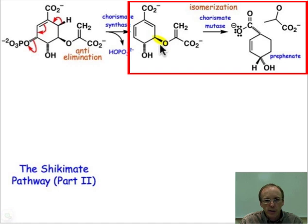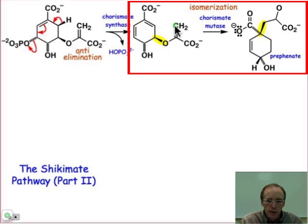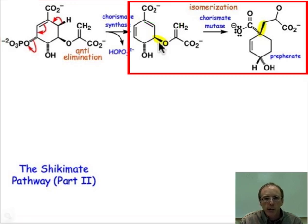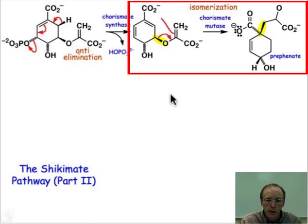The bond that breaks is this carbon-oxygen bond that's highlighted in yellow. The bond that's made is this carbon-carbon bond shown in yellow, and the way that comes about is a connection between this CH2 group, which becomes that group, and the carbon atom in this six-membered carbocyclic ring. It turns out that this isomerization involves a concerted flow of electrons with the three arrows that you see there, so that the new bond is made and the carbon-oxygen bond is broken. We'll learn about that in an upcoming webcast.